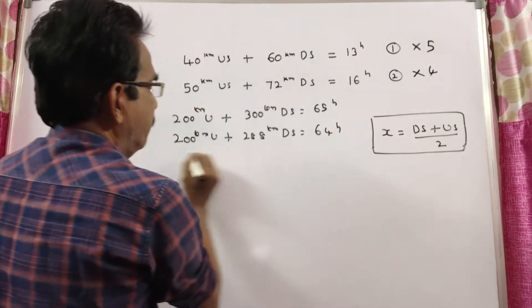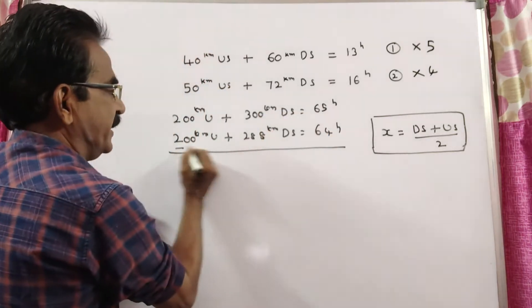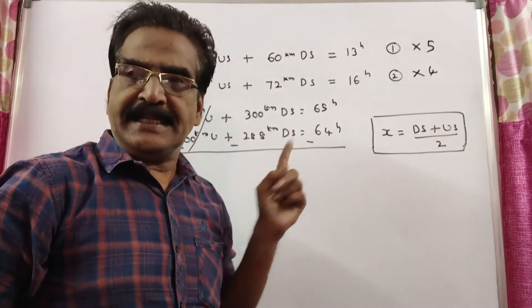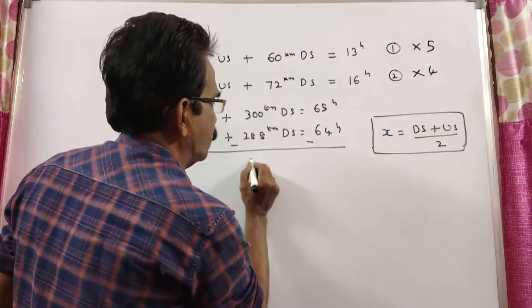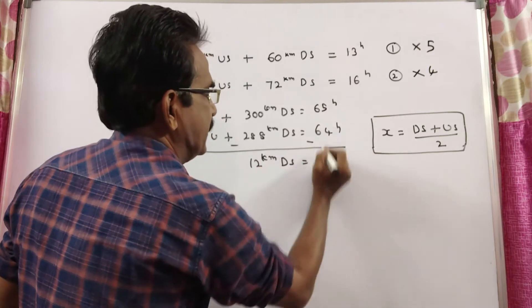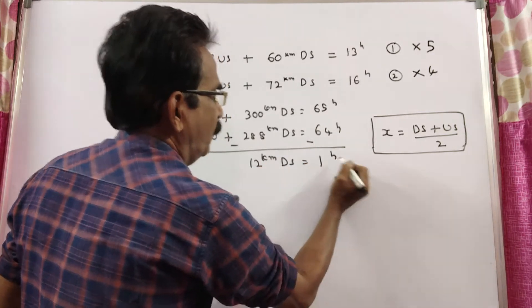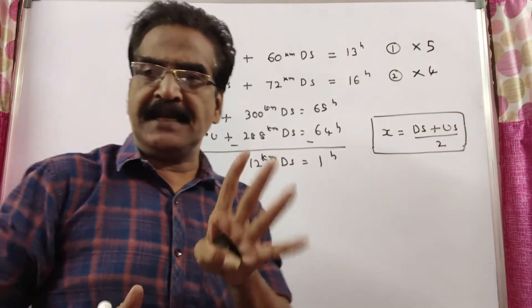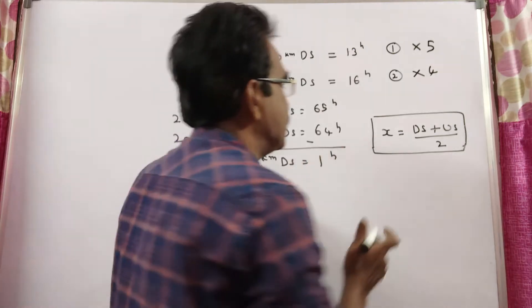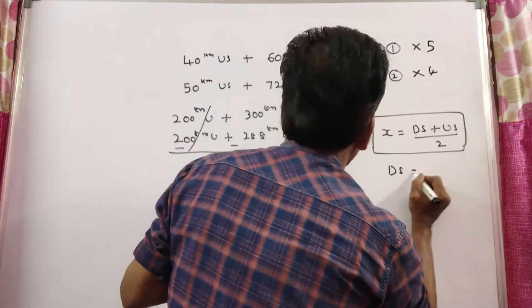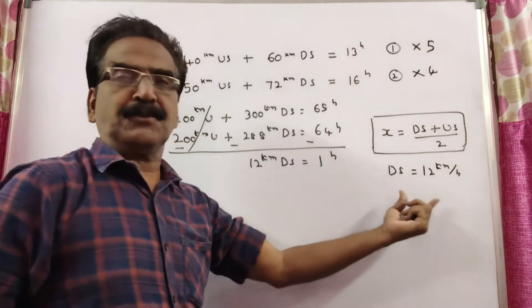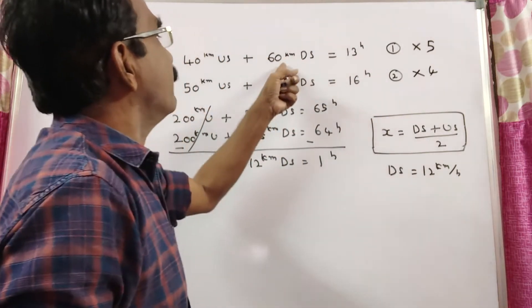By subtracting these two equations, we get 300 minus 288, 12 km downstream. 12 km downstream, it takes 65 minus 64, 1 hour. So, 12 km downstream in 1 hour means downstream speed DS is equal to 12 kmph.